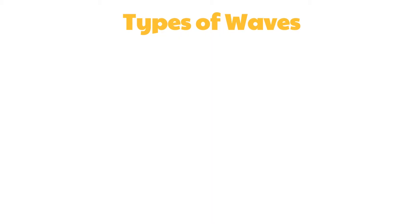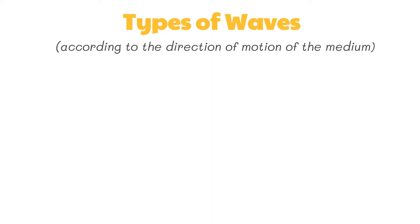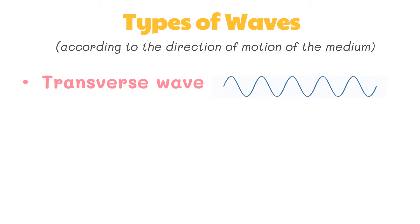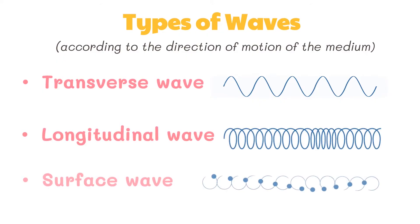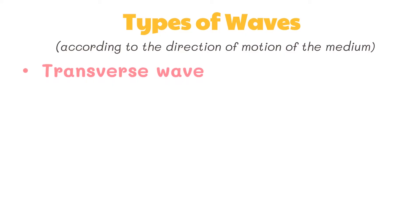Another way to categorize waves is on the basis of the direction of movement of the individual particles of the medium relative to the direction that the waves travel. Categorizing waves on this basis leads to three notable categories: transverse waves, longitudinal waves, and surface waves.